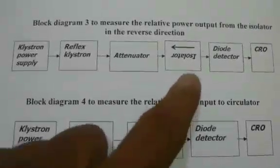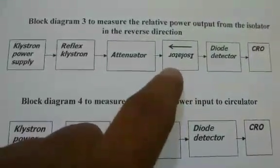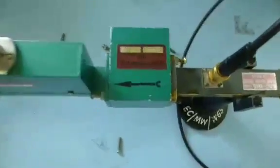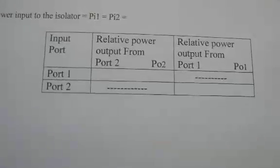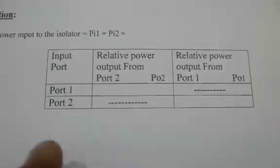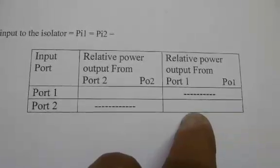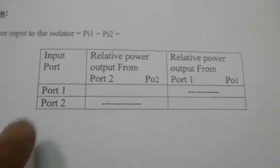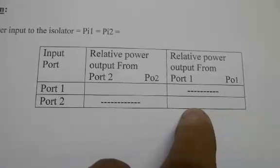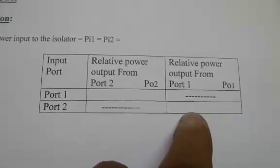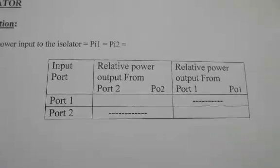Now the isolator is connected in the reverse direction to find the power output. The output in the reverse direction is very minimum — about 0.1 divisions. In the reverse direction we obtained 0.1 divisions, and since input was given to port two, this is noted as relative power output from port one as 0.1 divisions in the tabular column. With this, the isolator experimental part is over.